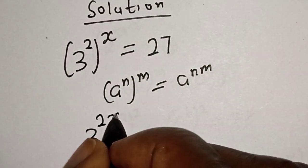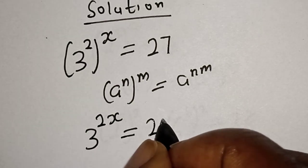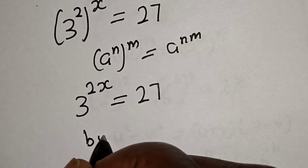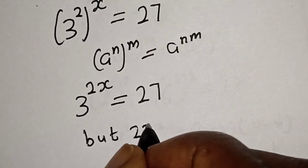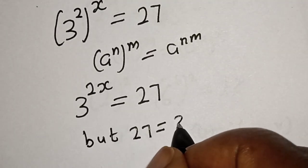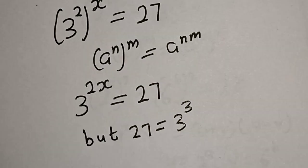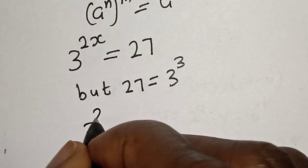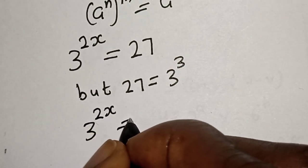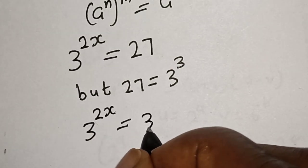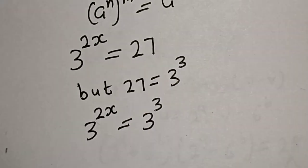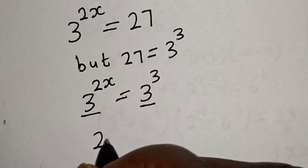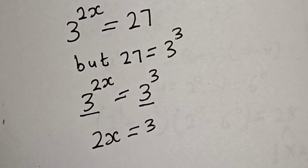3 raised to power 2s is equal to 27. But 27 is equal to 3 to the power of 3. So we have 3 raised to power 2s is equal to 3 to the power of 3. They have the same base 3, so 2s is equal to 3.